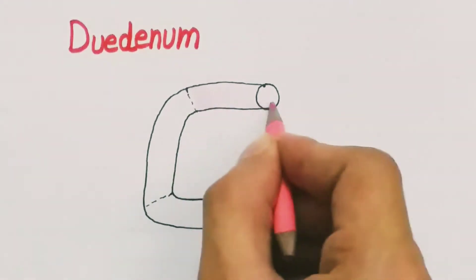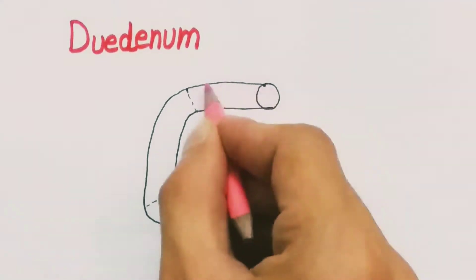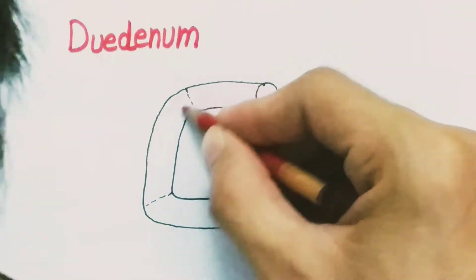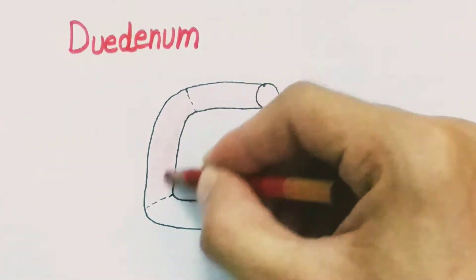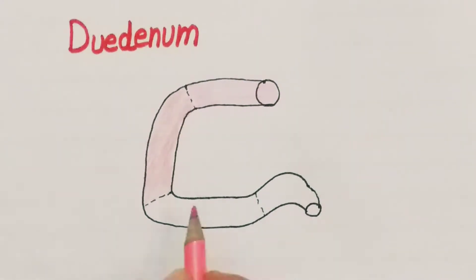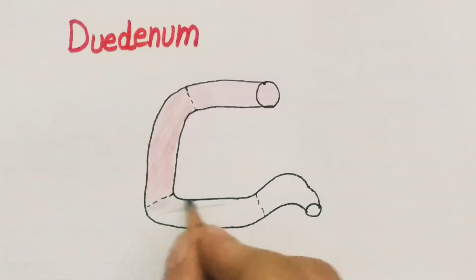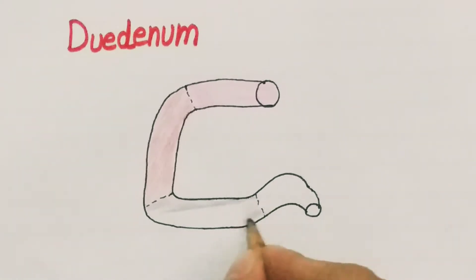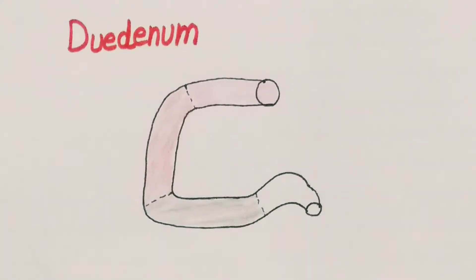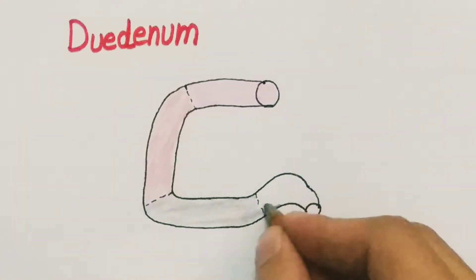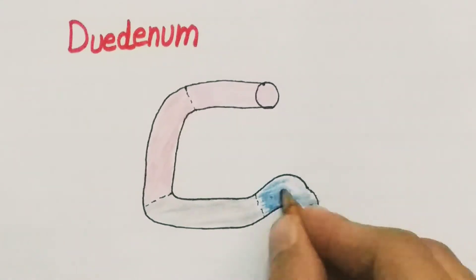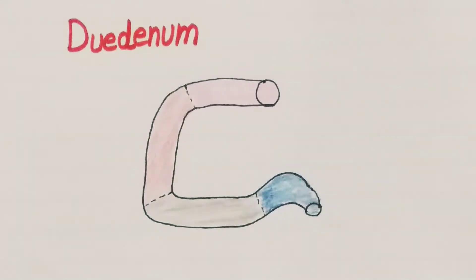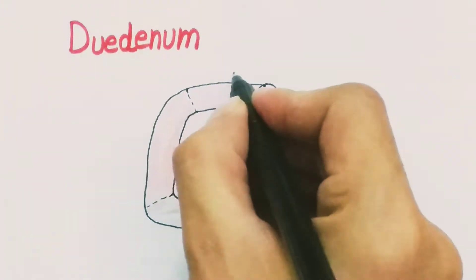The duodenum can be divided into four parts. Most parts of the duodenum are retroperitoneal, meaning they lie posterior to the peritoneum. The exception is the first portion of the duodenum, which is intraperitoneal and is attached to a ligament called the hepatoduodenal ligament.